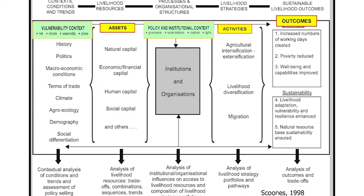The third strategy is migration, as I showed you in the beginning. If there are no options locally to diversify out of agriculture, then you have to move physically to some other location where you are able to find work — it could be a city, a rural area, a construction site, a brick kiln, and so on.